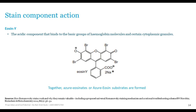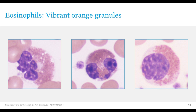The Eosin Y is the acidic component of the stain that binds to basic cellular components — hemoglobin molecules and certain cytoplasmic granules. When Azure B and Eosin Y components combine, we see compounds called azure eosinates. This is most obvious in the eosinophil, where we see vivid orange granules — more like refractile glass beads — in the cytoplasm. When they shine orange, we know we have a good stain working at the right pH.